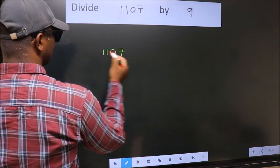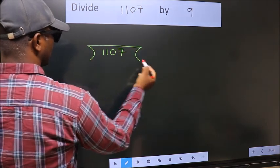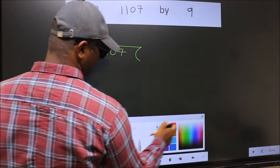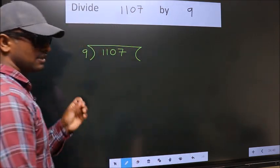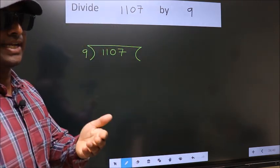1107 here, 9 here. This is your step 1. Next.